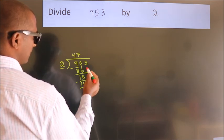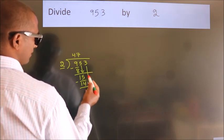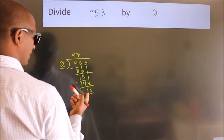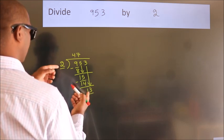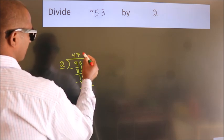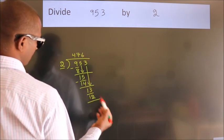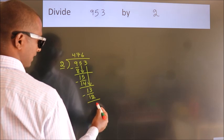After this, bring down the beside number. So, 3 down. So, 13. A number close to 13 in the 2 table is 2 times 6 equals 12. Now we subtract. We get 1.